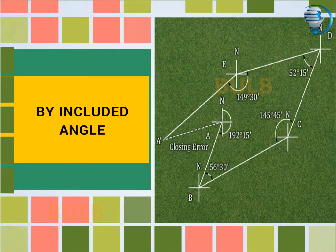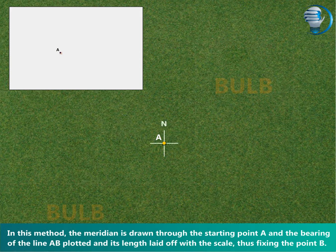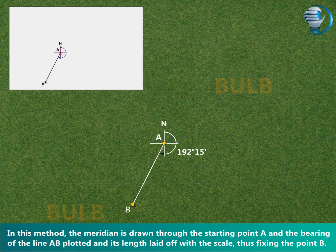Let us see how plotting is done by the Included Angle method. In this method, the meridian is drawn through the starting point A and the bearing of the line AB is plotted and its length laid off with the scale, thus fixing the point B.